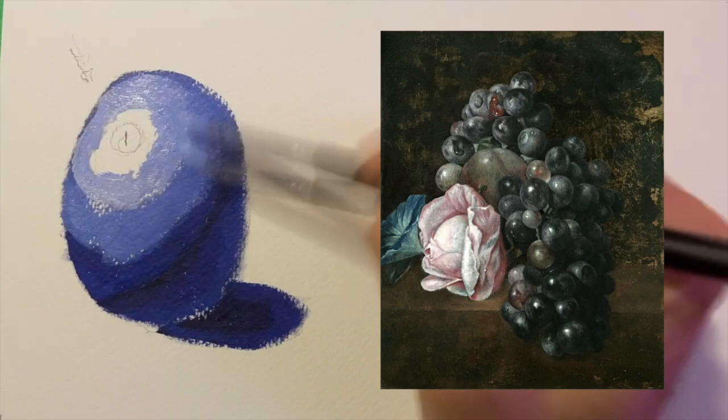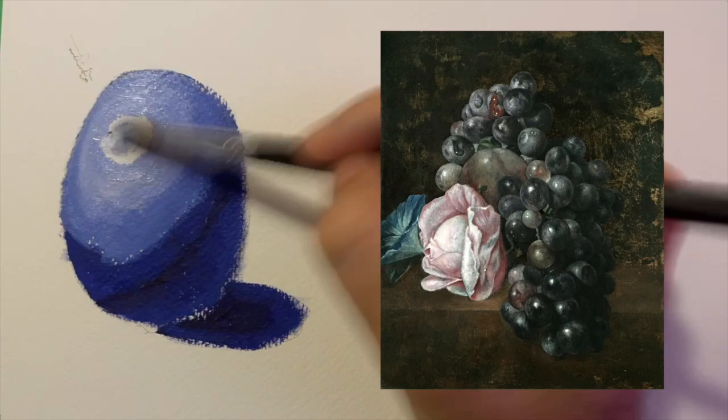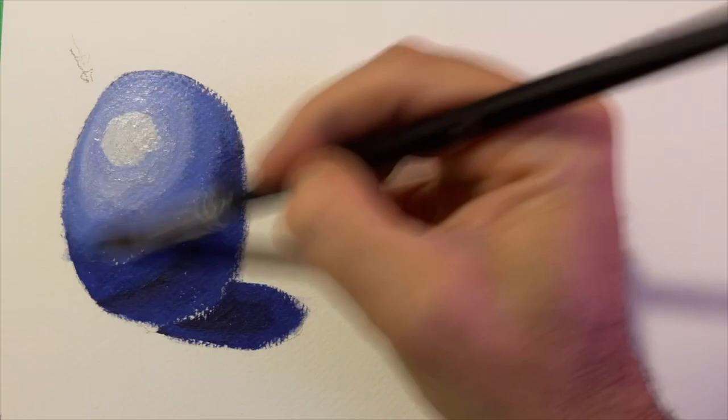What you just need to focus on is how much white is in the paint. Remember this is the opaque grape, and so all the light will be hitting the outside and staying on the outside.